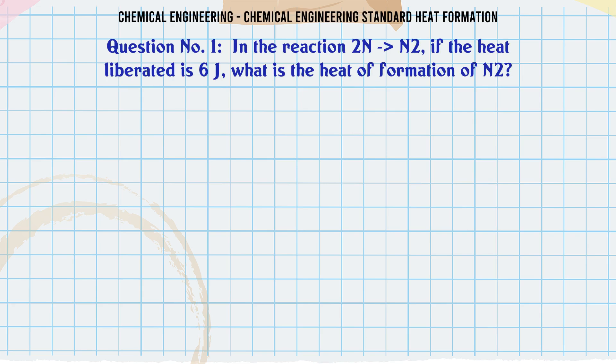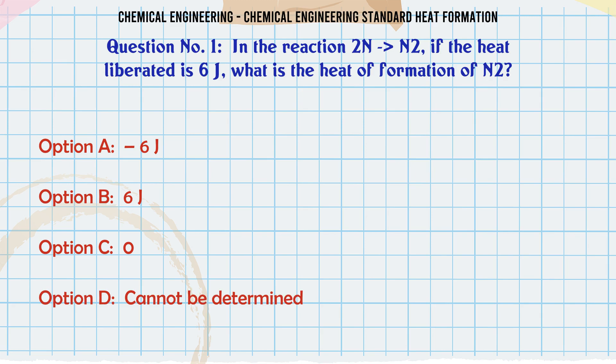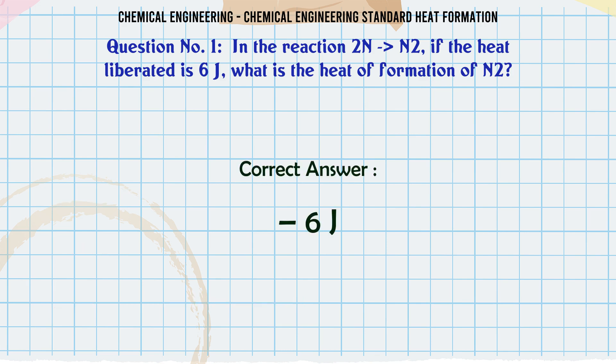In the reaction 2N → N₂, if the heat liberated is 6J, what is the heat of formation of N₂? A) 6J. B) -6J. C) 0. D) Cannot be determined. The correct answer is -6J.